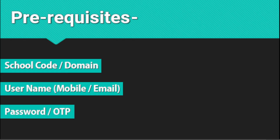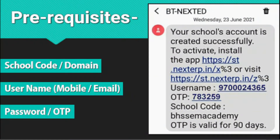So how do you get all these informations? You will be given a message by the NLP to your registered mobile number that you have given. This is the kind of message that you will get. In this message, let us see whether we can find out the school code, the username, and the OTP.